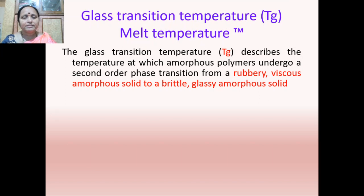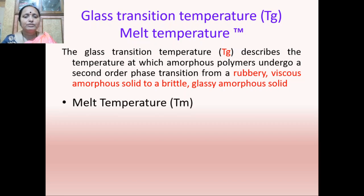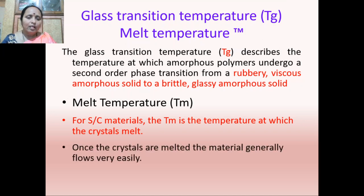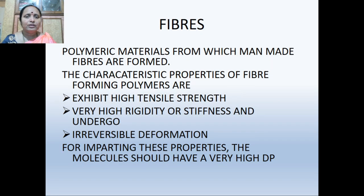Glass transition temperature describes the temperature at which amorphous polymers undergo a second-order phase transition from a rubbery, viscous amorphous solid to a brittle, glassy amorphous solid. For semi-crystalline materials, the melt temperature is the temperature at which the crystal melts, after which the material generally flows very slowly.